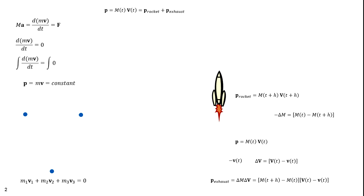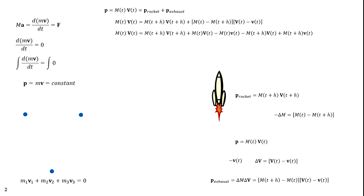We start with momentum equaling m(t) times V(t). That must equal the momentum of the rocket plus the momentum of the exhaust at time t+h. The momentum of the rocket is m(t+h) times V(t+h). The momentum of the exhaust is [m(t) − m(t+h)] times [V(t) − v(t)]. After doing some algebra, we multiply through and notice that the m(t)·V(t) terms appear on both sides of the equation and cancel.